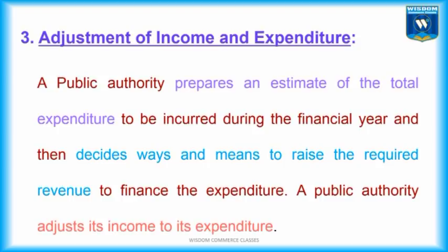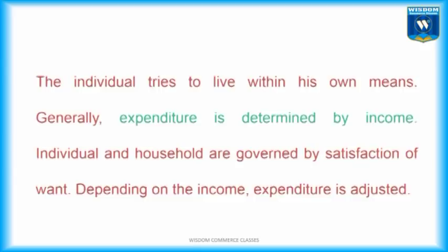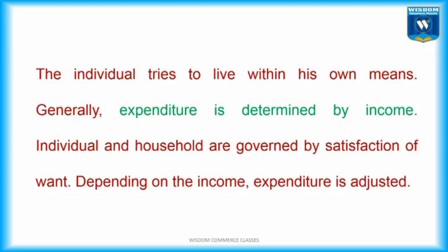Point No. 3 — Adjustment of Income and Expenditure. Individuals and households are governed by satisfaction of wants. Depending on the income, expenditure is adjusted. Point No. 4 — Assessment of Outcome.